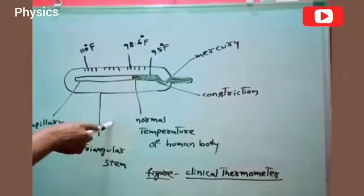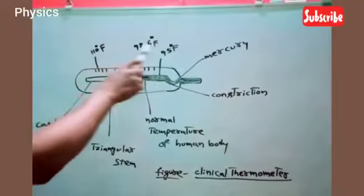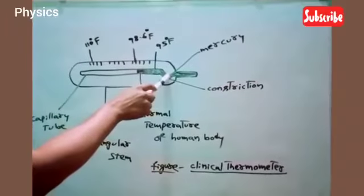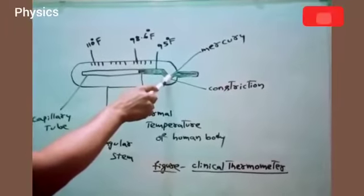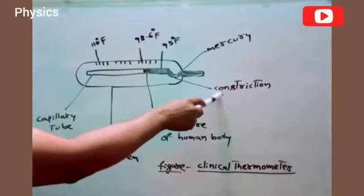This is a diagram of a clinical thermometer. In a clinical thermometer, this is Mercury. And also this is Constriction.